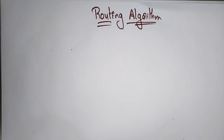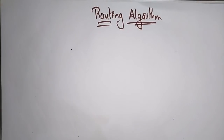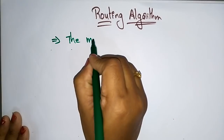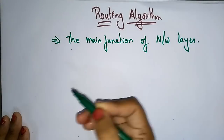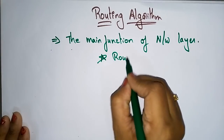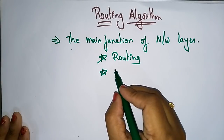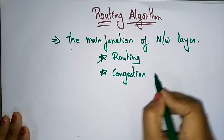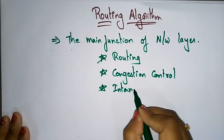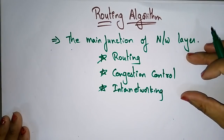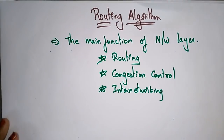Welcome back. The next topic in data communications and networks is routing algorithms. This concept comes from the network layer. The three main functions of the network layer are routing, congestion control, and inter-networking. In this session, we will focus on what routing is.